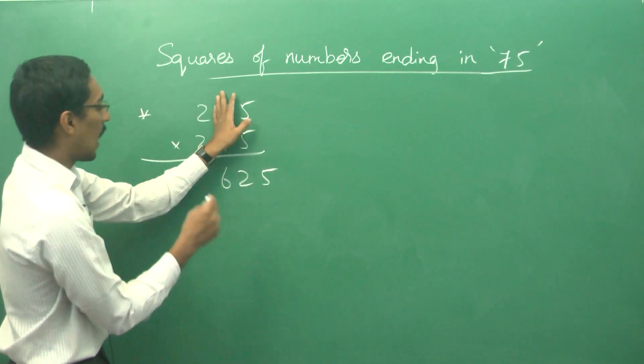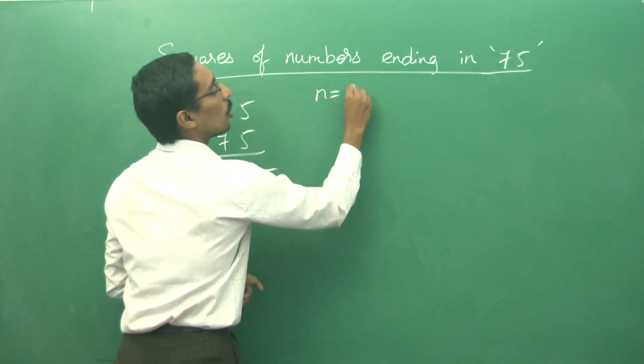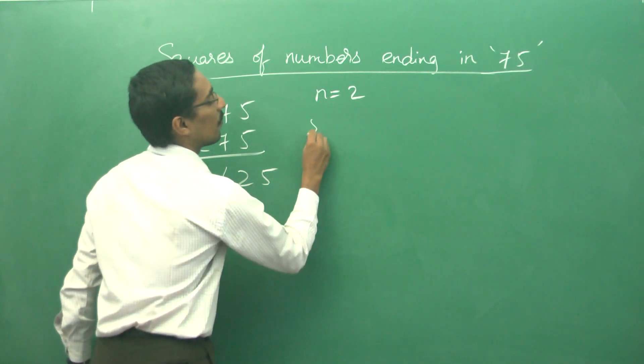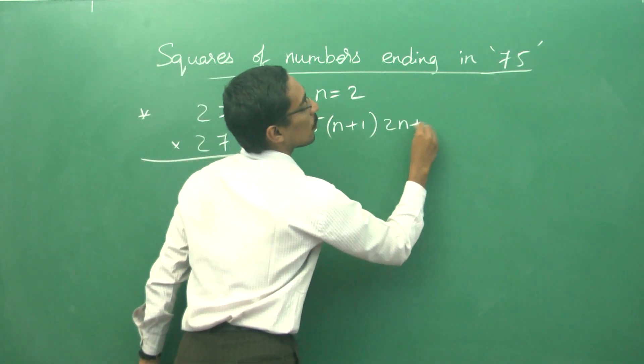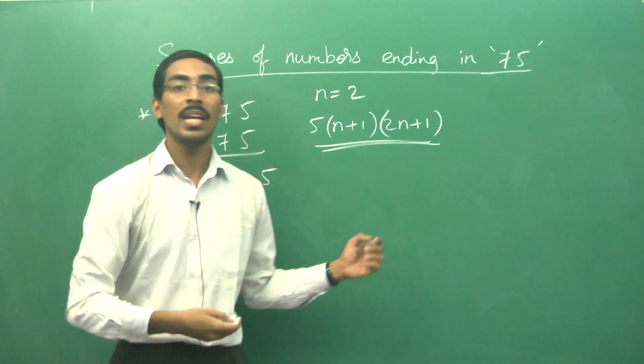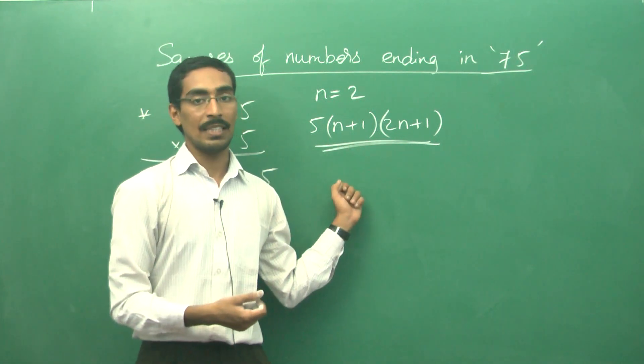For 275, the n value is taken as 2. The remaining portion is given as 5 into (n+1) into (2n+1). So this term please remember very well: it is given by 5 × (n+1) × (2n+1).